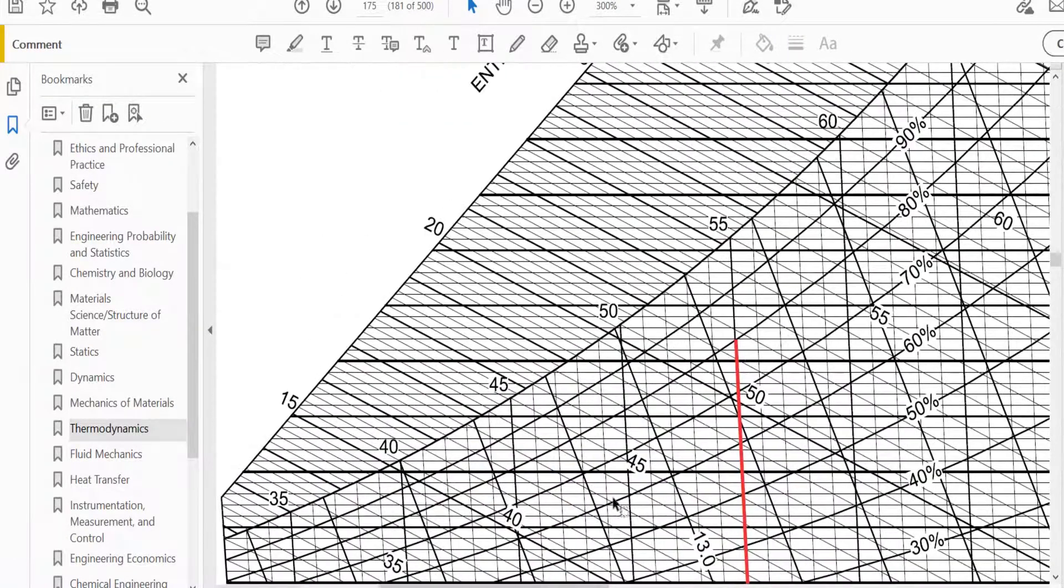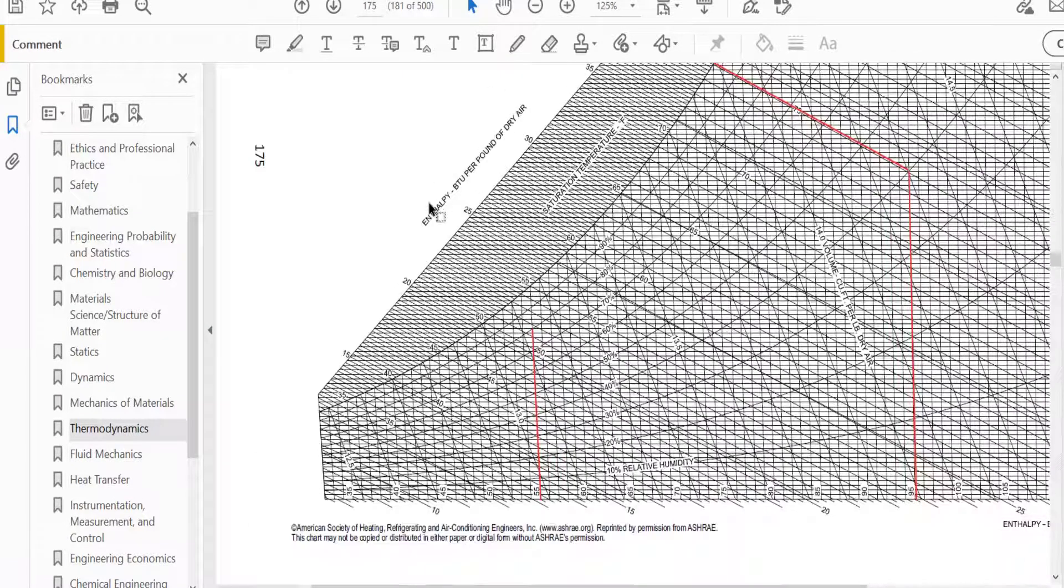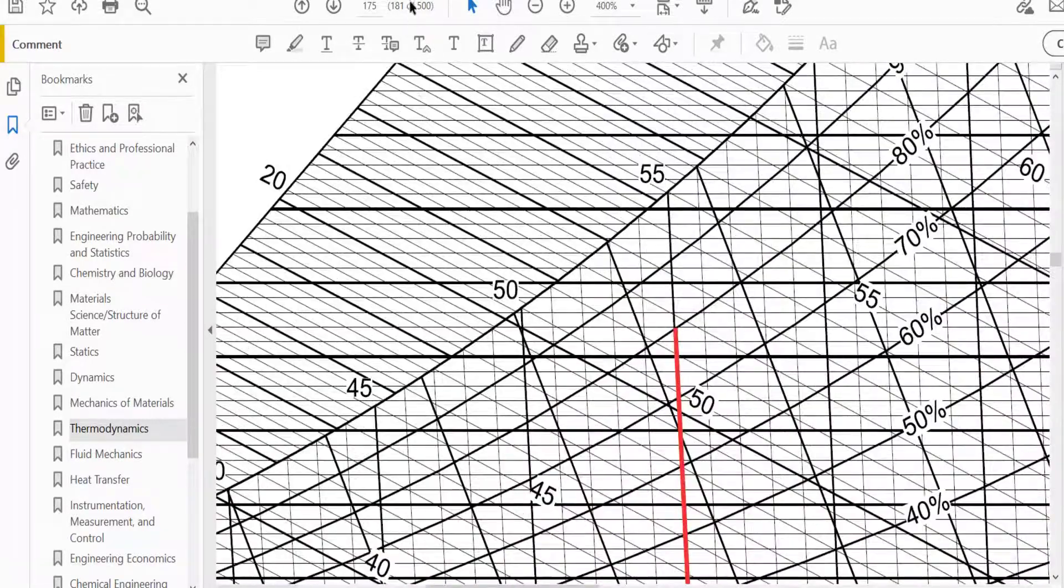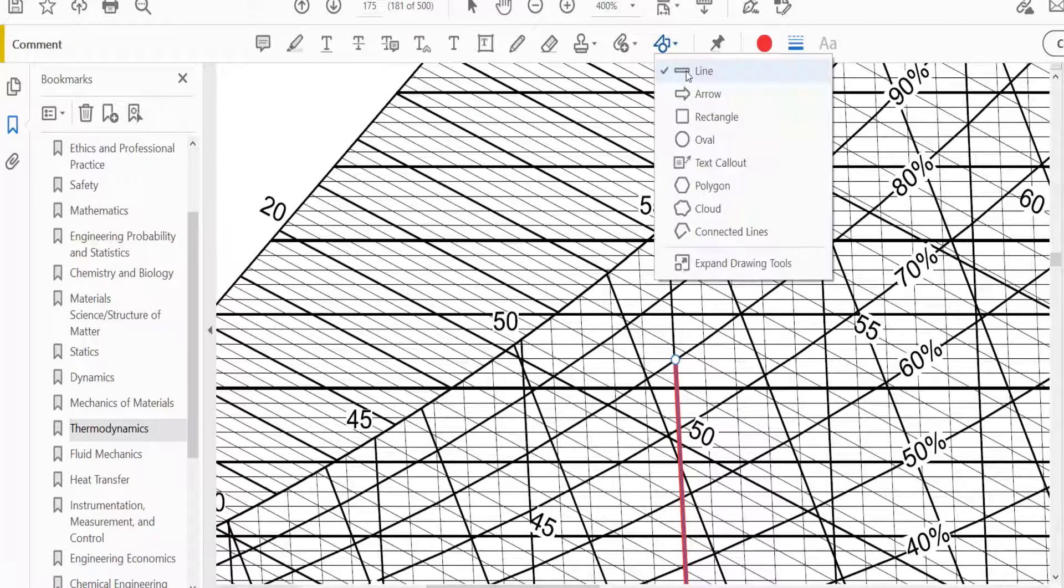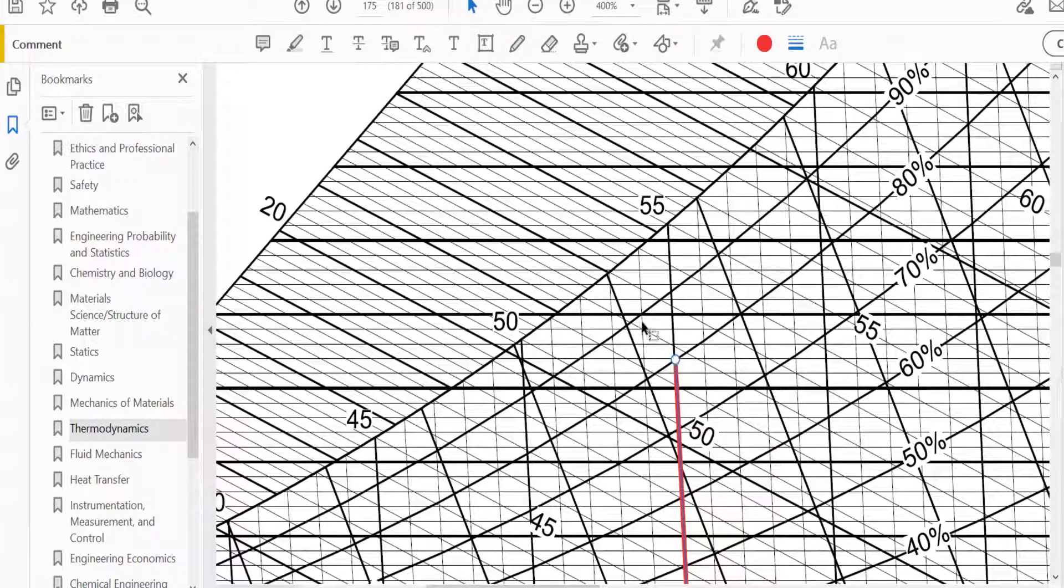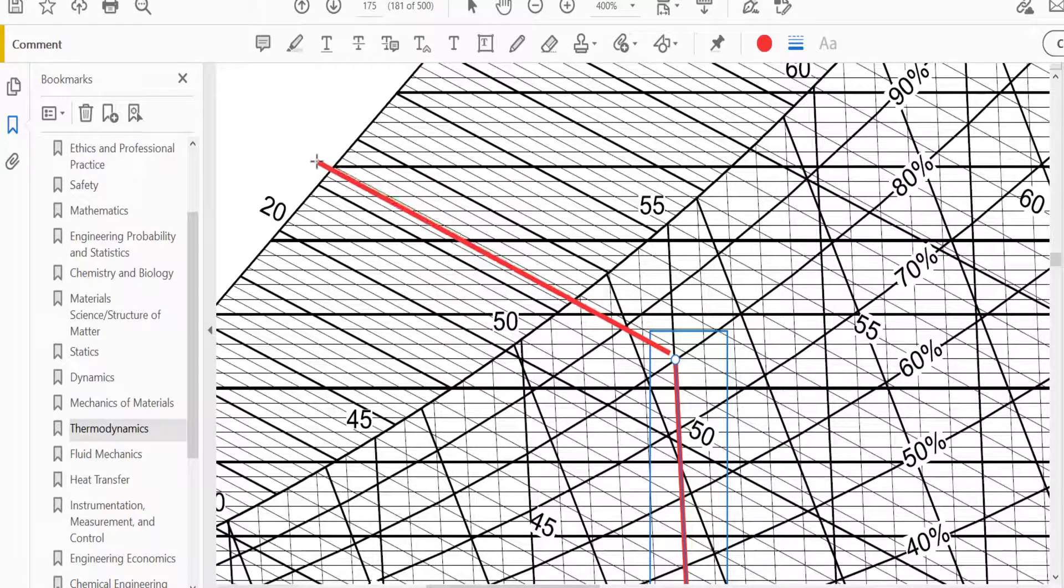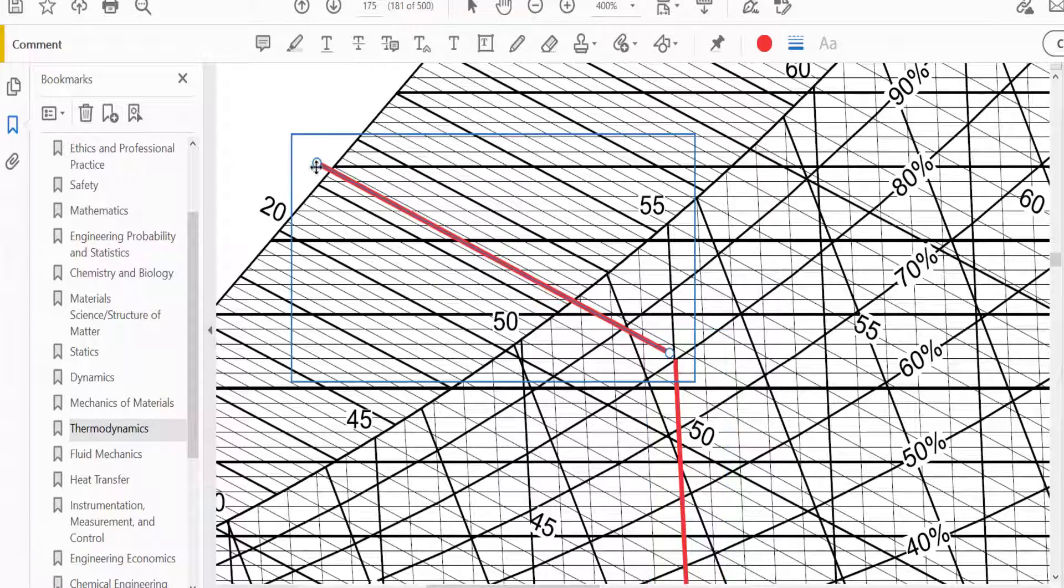And now we have to go across to the enthalpy, right? This is the enthalpy, 15, 20, 25, 30, and so on. So you go across there, and you can annotate it here, the PDF. So you can go across, and make sure you follow that line, and it's somewhere there.